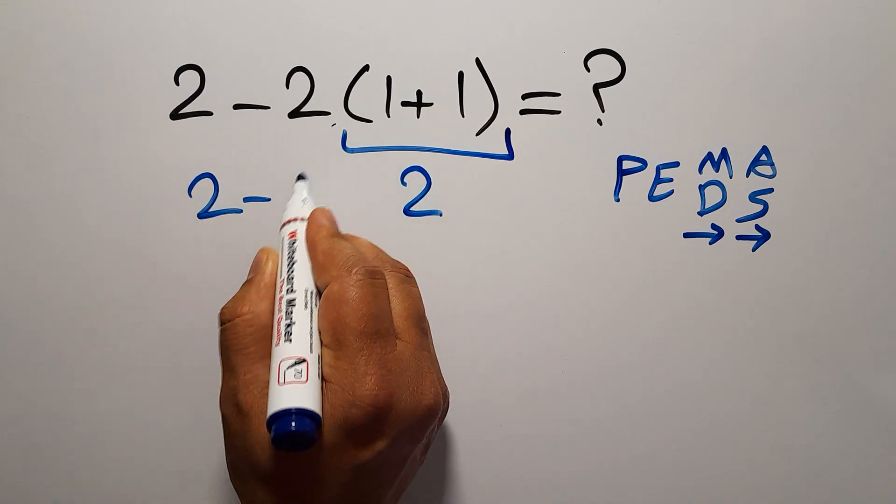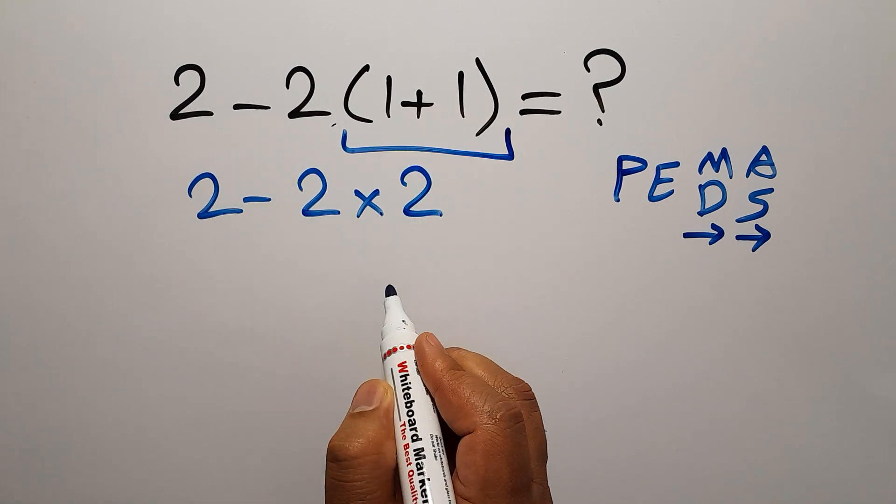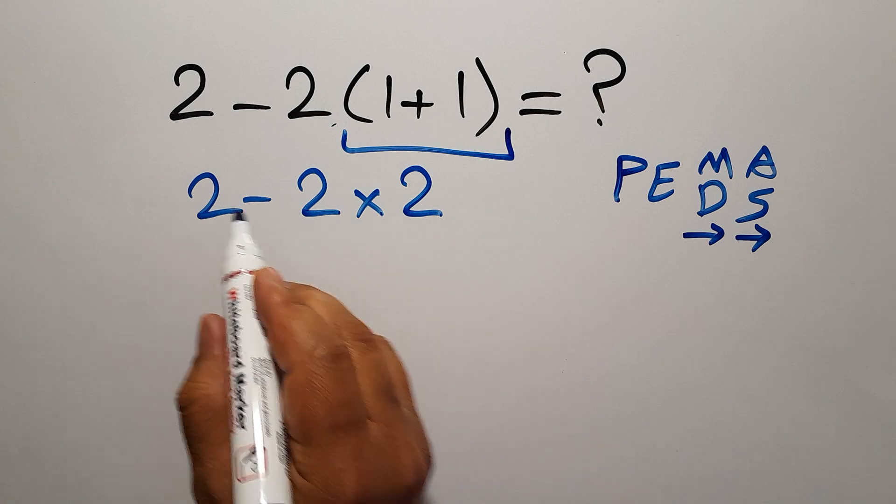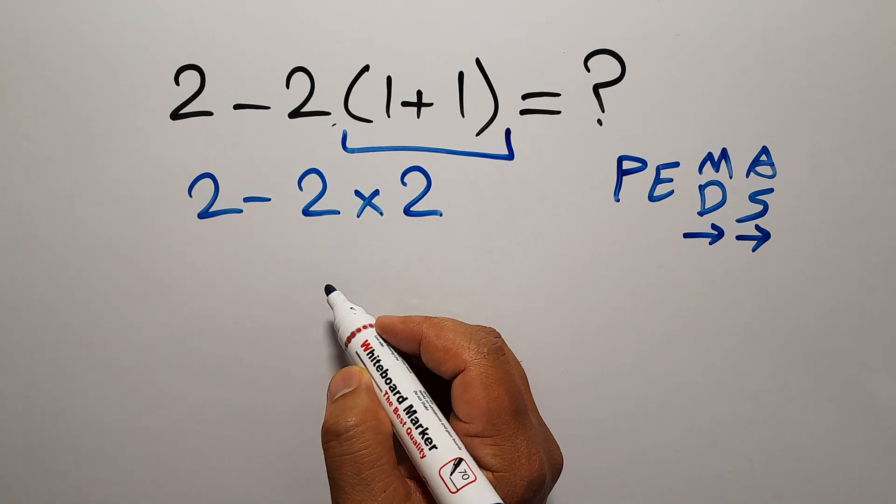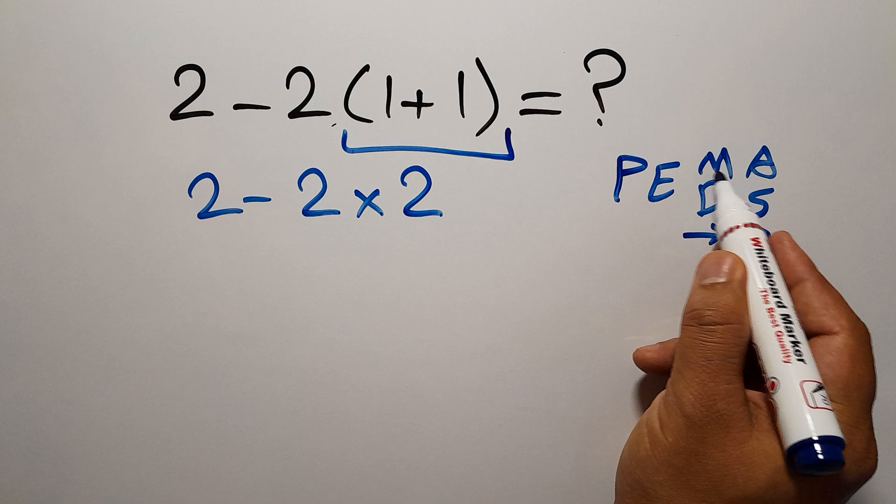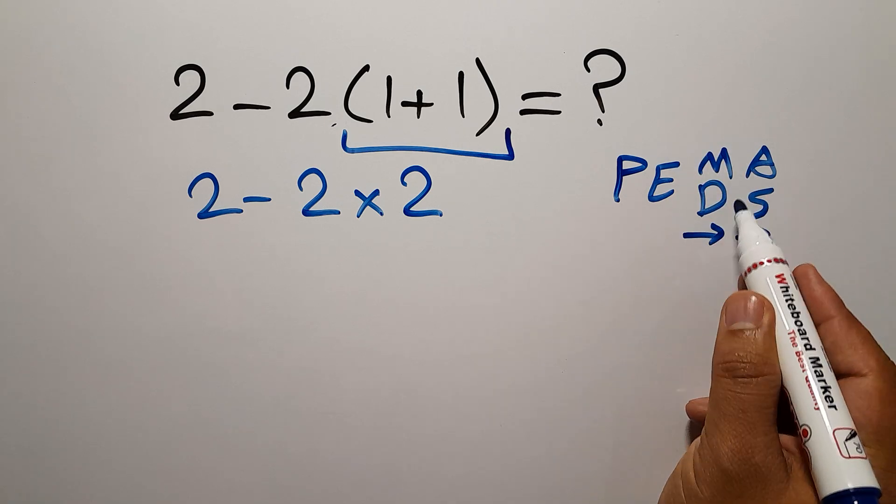So we have 2 minus 2 times 2. Now we have 1 subtraction and 1 multiplication. In PEMDAS, multiplication comes before subtraction.